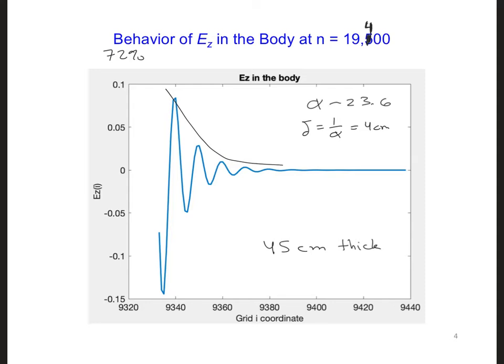We can see the exponential decay of the electromagnetic wave in this plot, which shows a snapshot of the Ez fields in the body at the same moment in time as on the previous slide at 19,400. So on the left here, it's probably right here where the plot ended, is the surface, the left surface of the body. And over here is the right surface of the body.